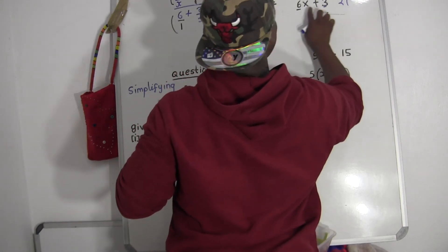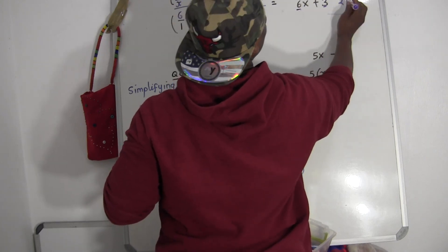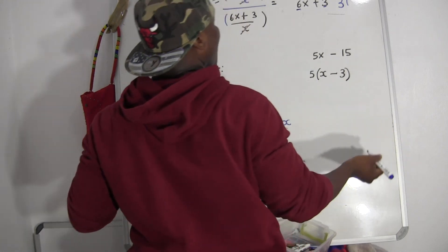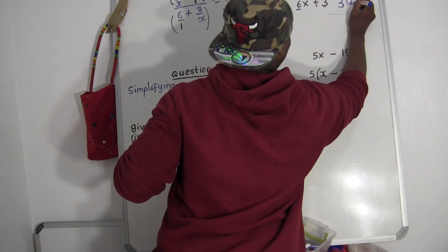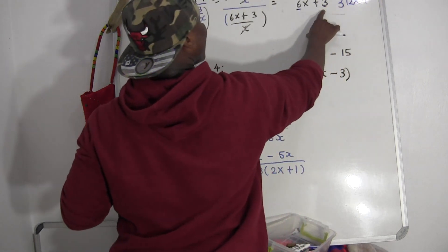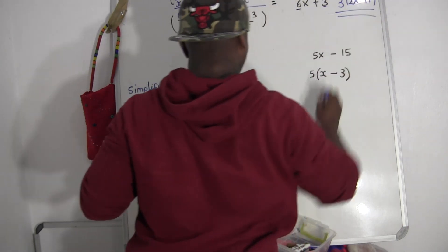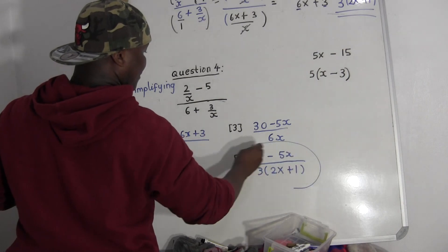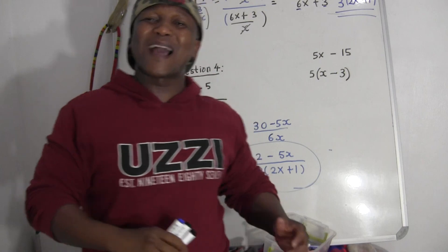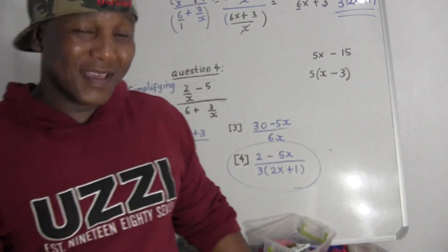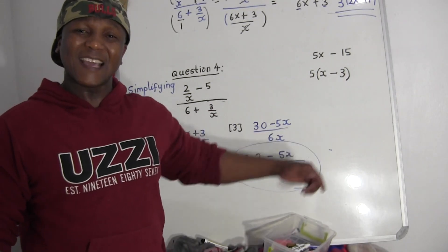Now look at the bottom — can we factorize? Three is common for both six x and three. If I take three out from six x, six divided by three gives two, so I get two x. Taking three out from three gives one. So the final answer is two minus five x over three times two x plus one. This matches option four. If you found this helpful, make sure you subscribe for more videos.